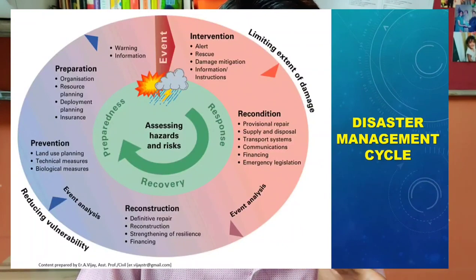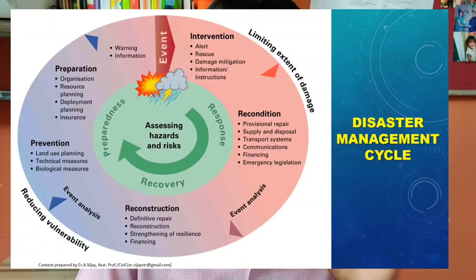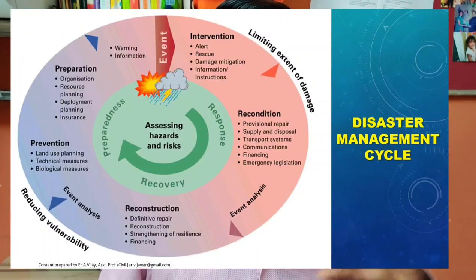Starting from intervention, going through the reconnaissance process, then analysis, reconstruction, prevention and preparation — from limiting the extent of damage to reducing vulnerability — this can be achieved only when we learn from past history. The strategies must be made in such a way that they can be modified for each and every state in India. For example, Tamil Nadu is highly prone to cyclonic storms, so in that scenario the policies and units can be trained exclusively focusing on cyclones and subsequent rescue operations.